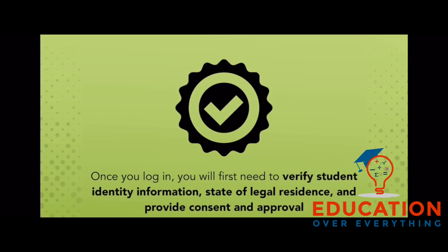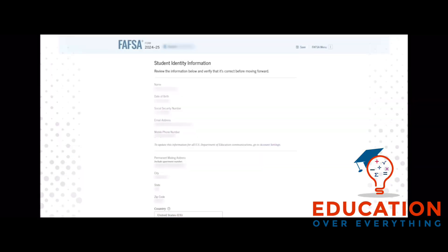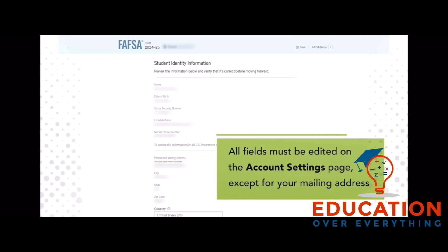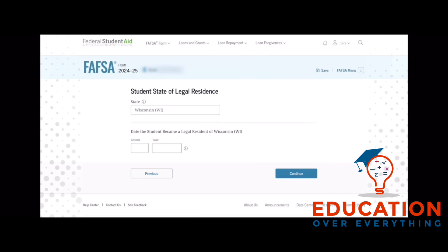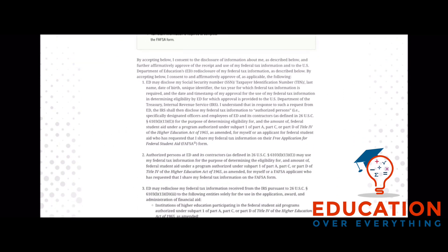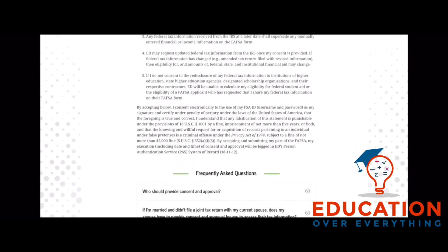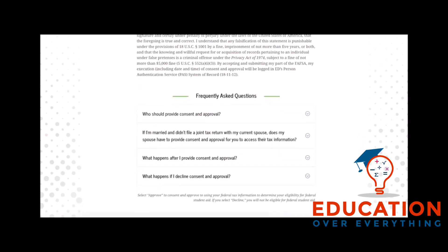Once you log in, you will first need to verify student identity information, state of legal residence, and provide consent and approval. All fields must be edited on the account settings page, except for your mailing address. On the state of legal residence page, select the state and enter the date you became a resident. Next, you will need to provide consent and approval for your federal tax information to be transferred into the FAFSA directly from the IRS. You must provide consent and approval in order to be eligible for federal financial aid.